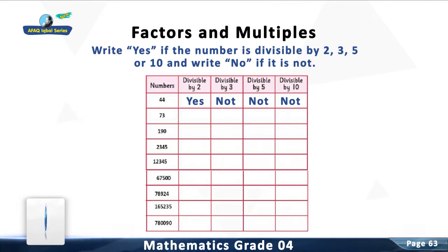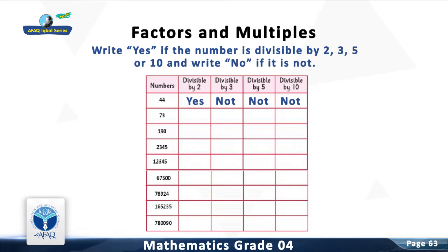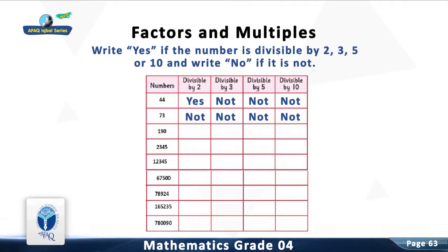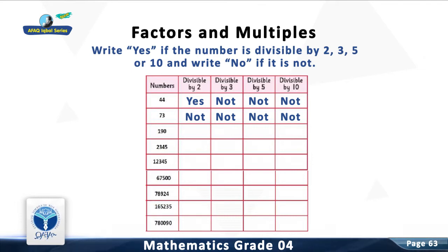Question 2: Check the divisibility of 73 by 2, 3, 5, and 10. You are right. It is not divisible by 2. It is not divisible by 3. It is not divisible by 5.